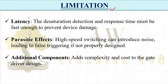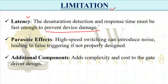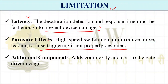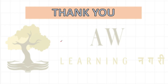Limitations of DSAT protection: first, it is generally preferred for IGBTs. Second, latency — the desaturation detection and response time must be fast enough to prevent device damage; if detection takes a few microseconds too long, the device may burn out. Third, parasitic effects — high-speed switching can introduce noise leading to false triggering if not properly designed. Fourth, additional components such as a capacitor, diode, and resistor are required, increasing component count.